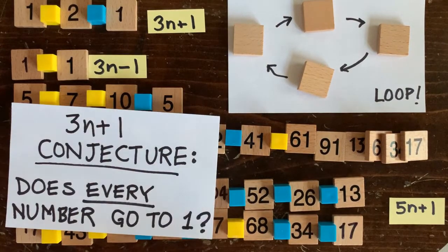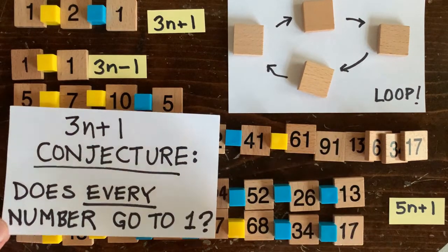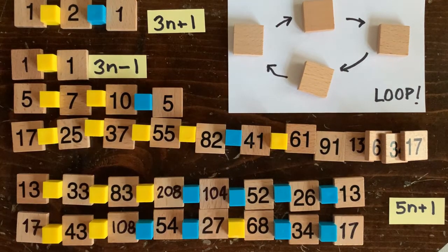One way to resolve this conjecture would be to find a loop, some specific number that never goes to 1, proving that the conjecture is false.